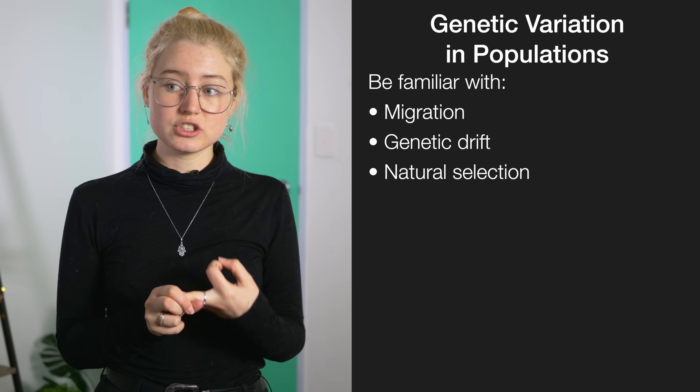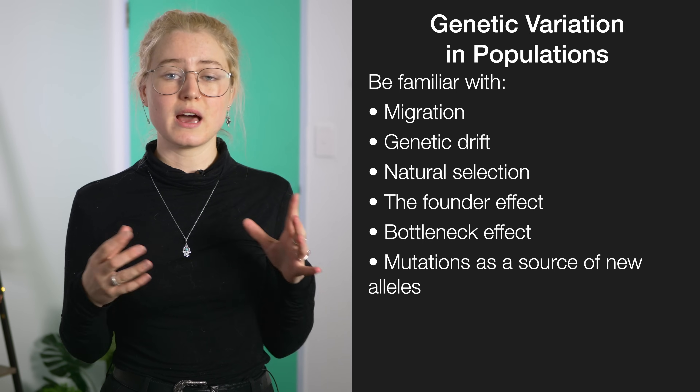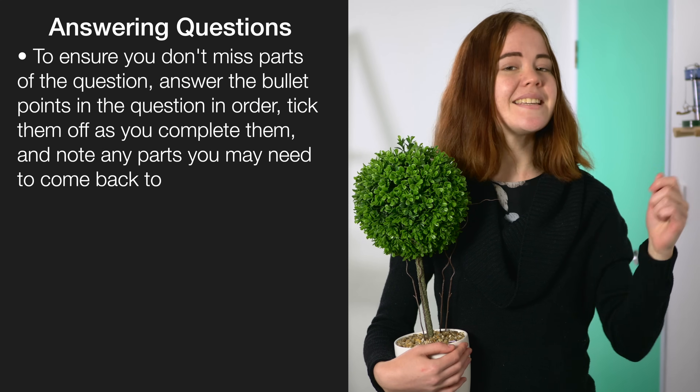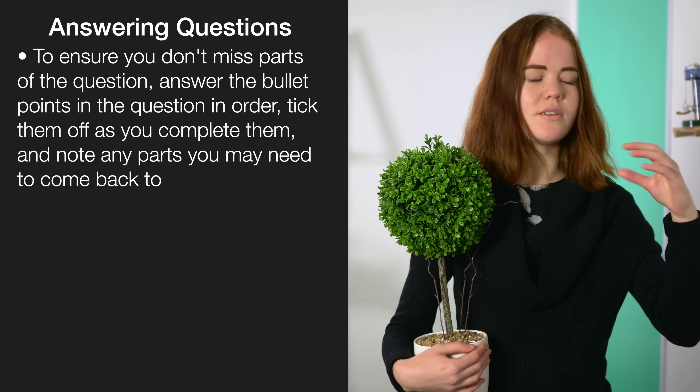This brings us to our second section of the standard, which is genetic variation at the population level. Questions under this topic can be selected from things like migration, genetic drift, natural selection, the founder effect or the bottleneck effect, and mutations as a new source of alleles. Bear in mind that mutations can be asked in either part of the standard. Unlike questions on patterns of inheritance which are usually broken down into sections, questions about genetic variation on a population level tend to be just one long excellence-style answer with achieved and merit sections nestled within it. Because of this, students often miss a key part of the question. To make sure this doesn't happen to you, try to answer the bullet points at the bottom of the question in order, tick them off when you're done, and if you need to come back to a bullet point and you're not sure what to write, leave a space in your answer.